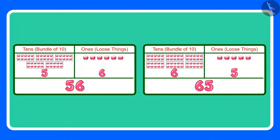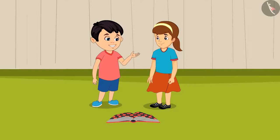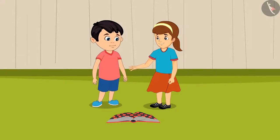Children, can you tell me which number is greater between the two? 65 is the greater number because it has more tens. Since 65 is a greater number, Aarti has won the game. Chonu says: Yes, I have understood, Aarti. Anyway, Chonu, now I am going home. See you tomorrow!